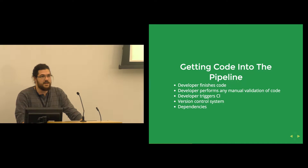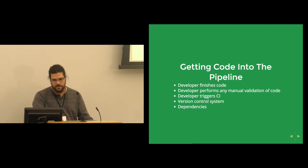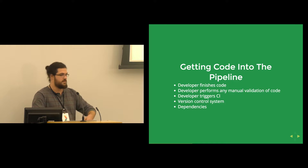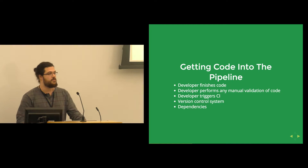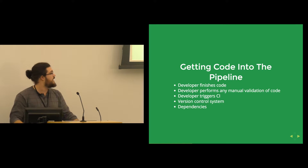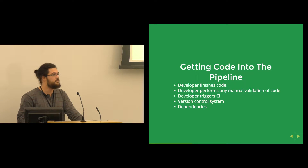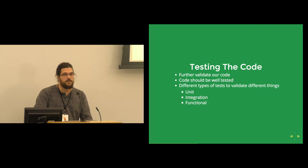Part of building our code is actually getting it into the pipeline. A developer at his workstation finishes some new feature, some new story card, does any manual validation — maybe running test scripts or booting up the application and clicking around a bit. Once he's done with that, he's going to hand off his code and let it fly in the CI pipeline. Generally, the developer will have merged his code into the central repository, and that's going to trigger our CI system.